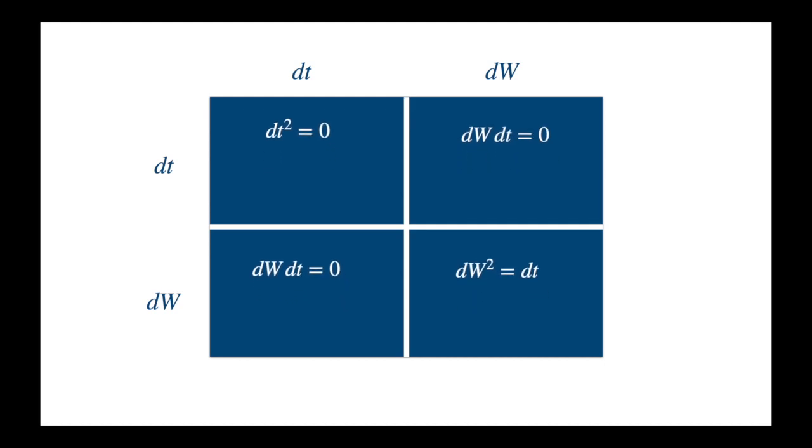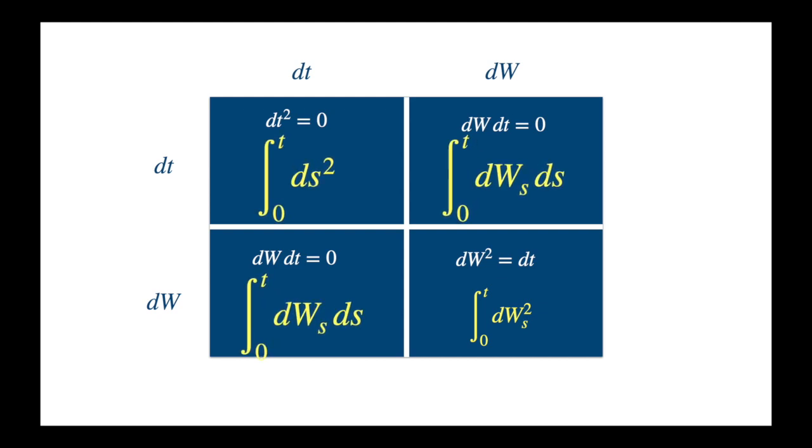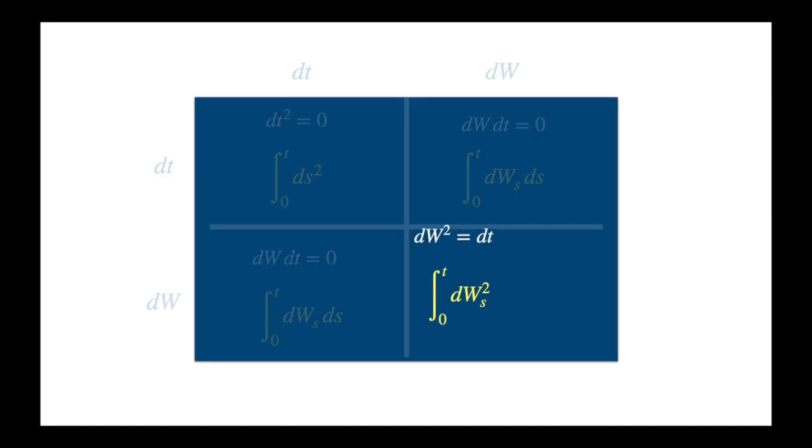We know these differentials are a convenient notation for the integrals. We have previously shown that these terms go to 0 in the mean square, and we are now going to apply the same procedure to show that dW squared goes to dt.